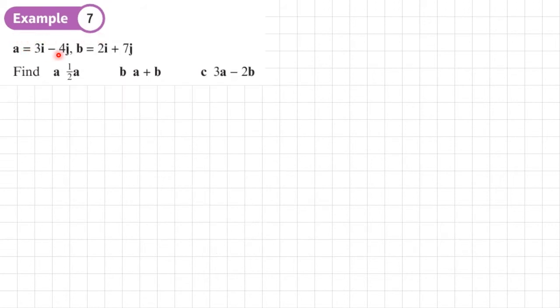Example 7. A equals 3I minus 4J, B equals 2I plus 7J. In part A, we want to find half A. Now finding half A is finding half of 3I minus 4J. So it's just like algebra. If this was X and Y or any letters, you would just half the numbers in here. So half of 3 is 3 over 2 or 1.5. Half of 4 is 2. So there we go. That's it. That's all that's needed.